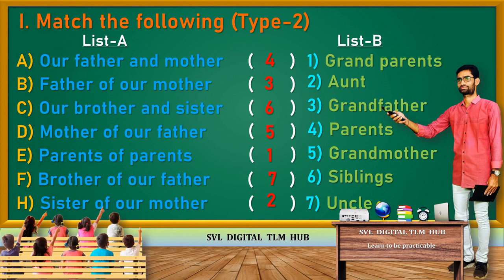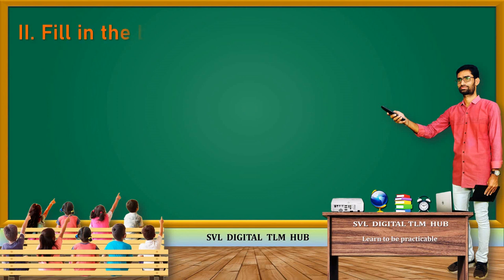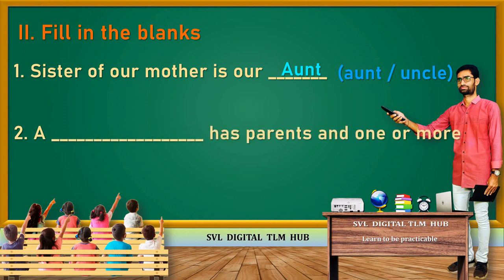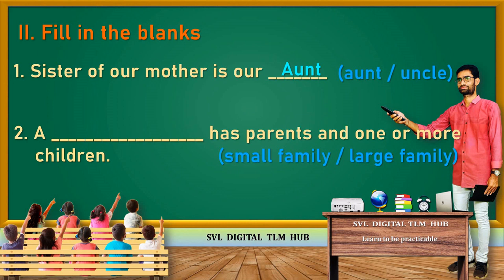Next one. Fill in the blanks. First one: Sister of Our Mother is our — options are Aunt or Uncle. Answer: Aunt is the right answer. Second: A small family has parents and one or more children — options are Small family or Large family. The answer is Small family.